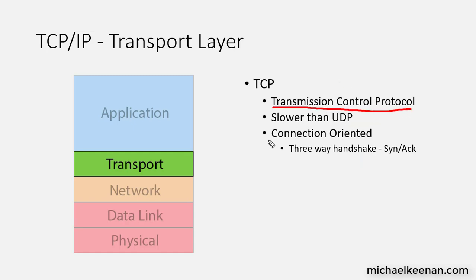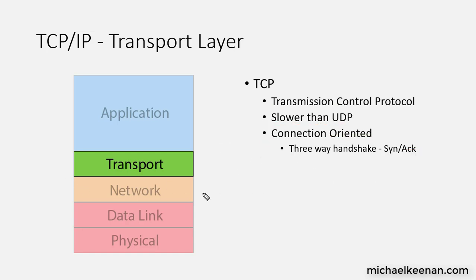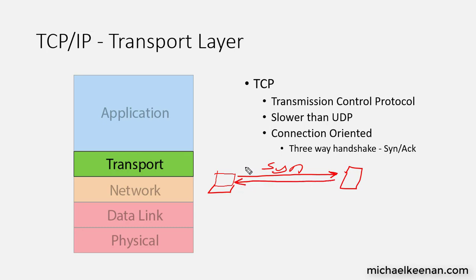The Transmission Control Protocol is connection-oriented. It is reliable, but it's also slower than UDP because of that reliability. It uses something called a three-way handshake whenever it establishes a connection, and it uses sequence and acknowledgement numbers to pass data back and forth. If we had a workstation and a server, the workstation first sends a SYN request to the server. The server sends a SYN-ACK back, and then the workstation sends an acknowledgement back to the server. That completes the three-way handshake.